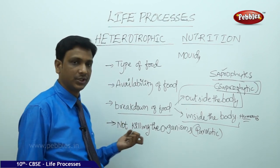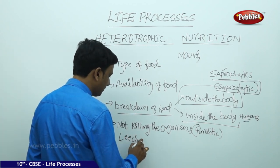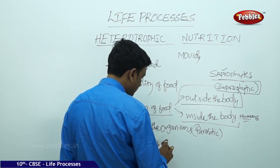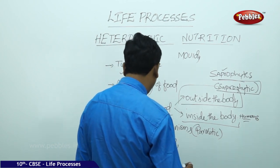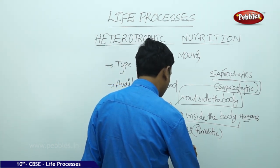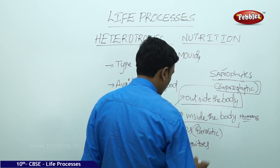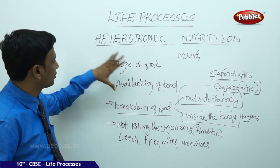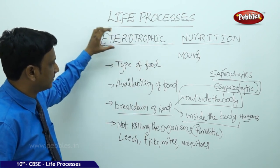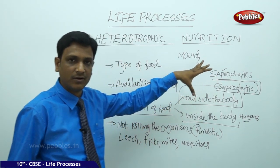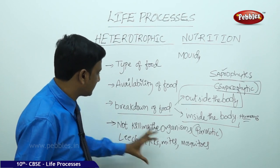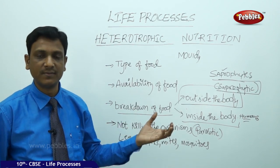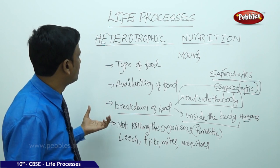Parasitic animals include leeches, which feed on the blood of animals without killing them, as well as ticks, mites, and mosquitoes. These are examples of parasitic organisms. So under heterotrophic nutrition we see saprophytic nutrition — where organisms depend on decaying matter — and parasitic nutrition — where organisms live on and get materials from a host without killing it.